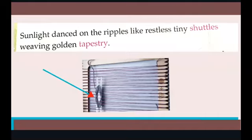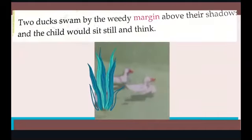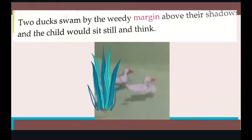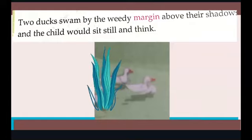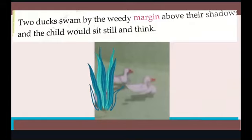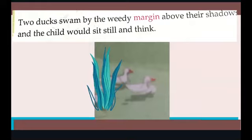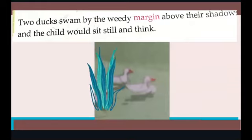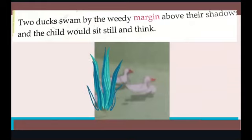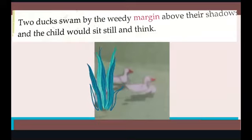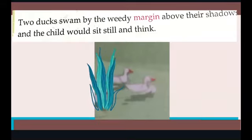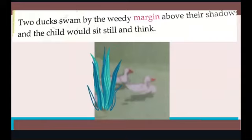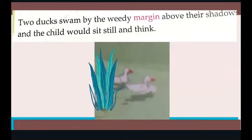Two ducks swam by the weedy margin above their shadow, and the child would sit still and think. Then two ducks would swim along the weedy margin, that is around the border of the pond. Margin means border. There are weeds, so two ducks would swim along the weedy borders, and the child would sit still and think.